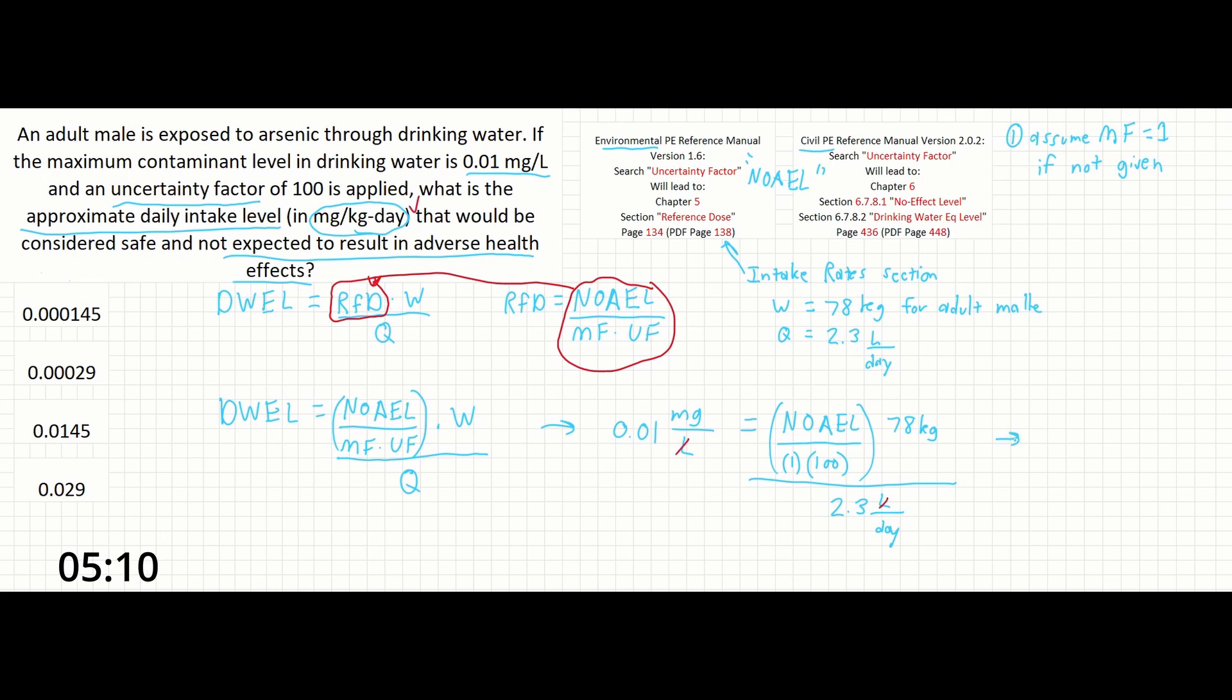Solving for our final unknown, we can see that the NOEL is equal to 0.0294 milligrams per kilogram day, which is our fourth answer on the left.